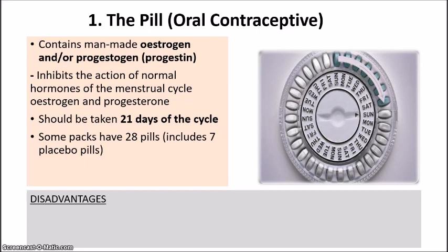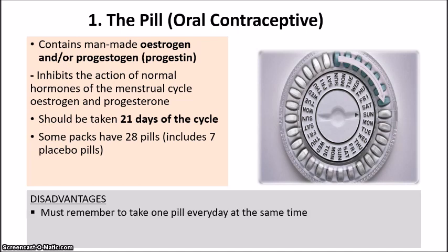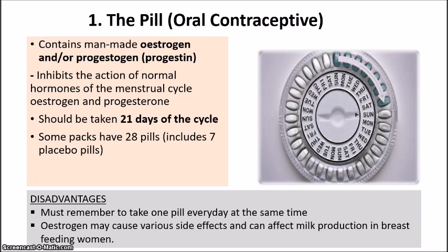The disadvantage of the pill is having to remember to take it every single day at the same time — not doing so reduces its effectiveness. If you skip a day or two, it can reduce the overall effectiveness at preventing pregnancy. A second disadvantage is that combination pills containing estrogen are likely to cause a range of side effects, and estrogen can also affect milk production in breastfeeding women. Women who are breastfeeding are usually recommended to use the progestin-only pill.